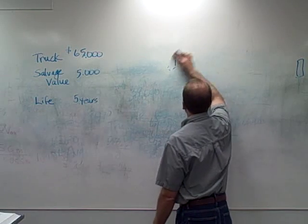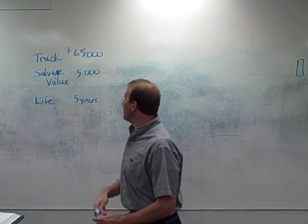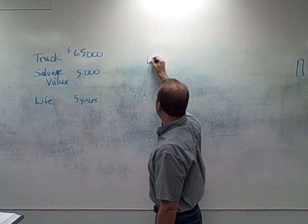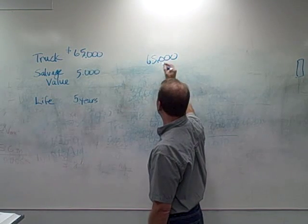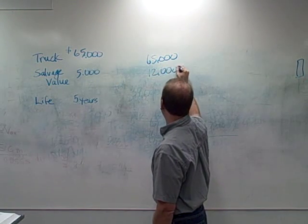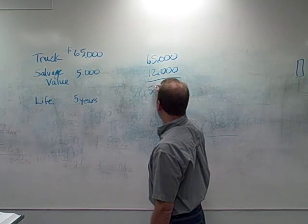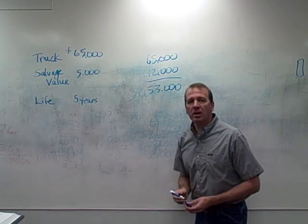We're not going to do the double declining. But let's say we've had this truck for a year. It has a value of $65,000. We're using the straight line depreciation, which was $12,000 a year. So this gets us a value of $53,000. So this is what's on our books.